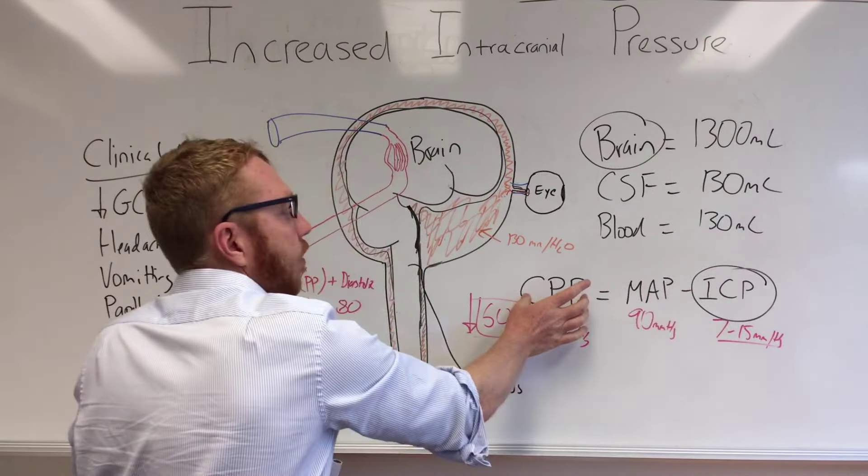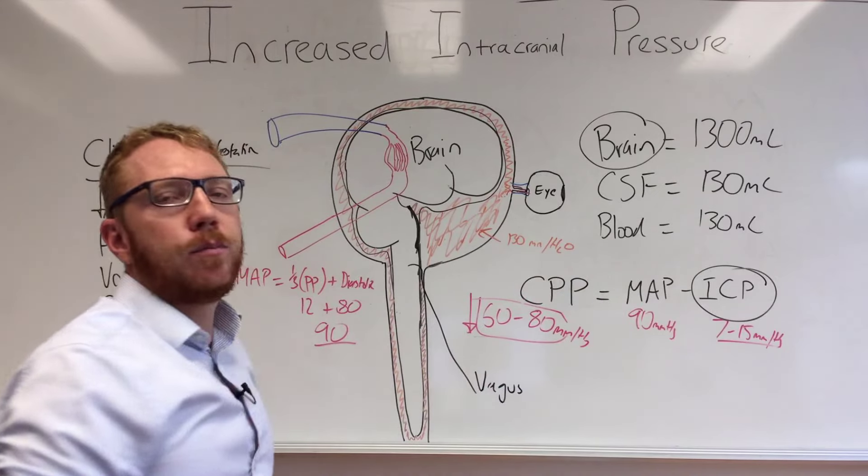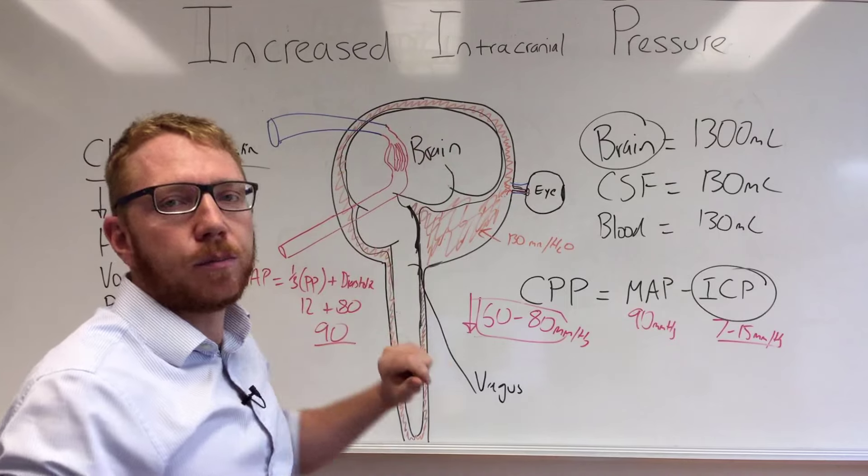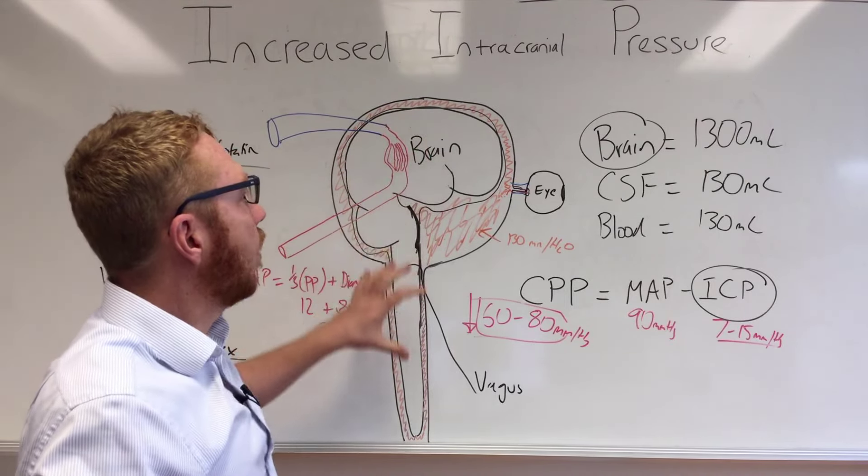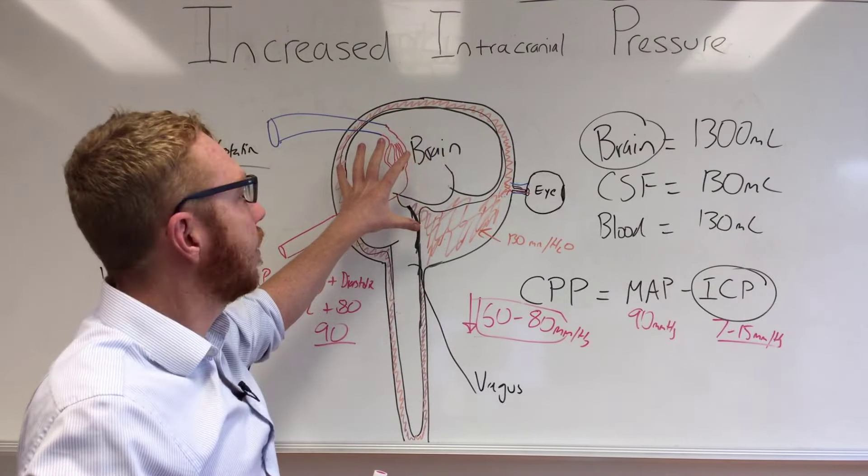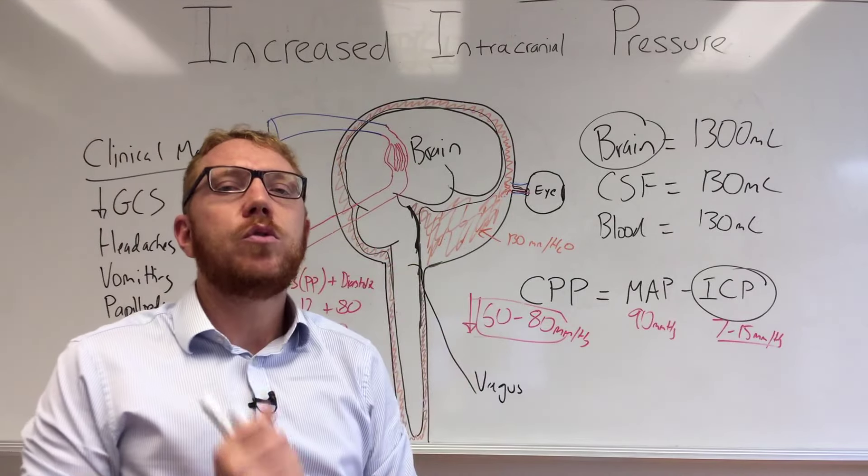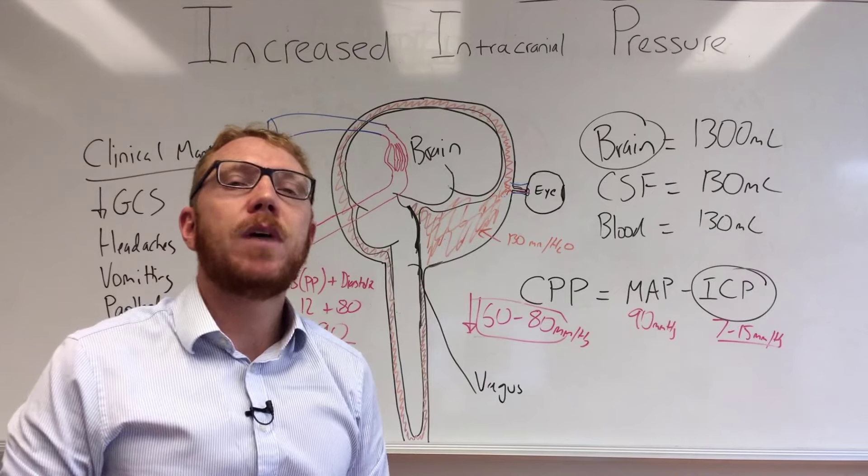As the intracranial pressure increases, which approaches the MAP, the CPP drops, so the brain's not getting perfused. The brain needs to compensate and tell the body there's a problem. So it will tell the body that it's not getting perfused, it's becoming ischemic, and it will tell the hypothalamus to give the sympathetic system a big drive.